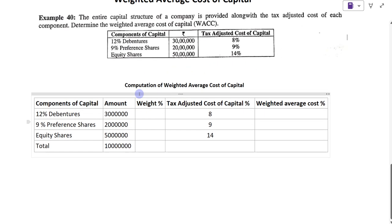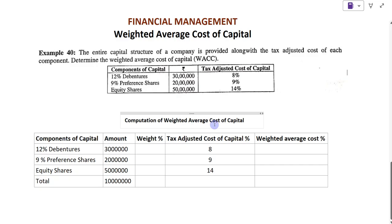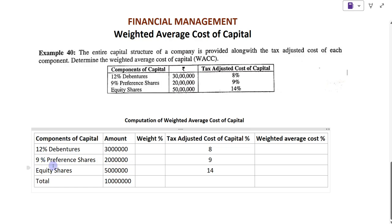Now, computation of weighted average cost of capital. I have prepared five tables. The first column is component of capital: 12% debentures, 9% preference shares, equity shares. The second column is the amount of each capital — 30 lakhs, 20 lakhs, 50 lakhs respectively — and then the total of this amount. Next is the weight percentage, or proportion.